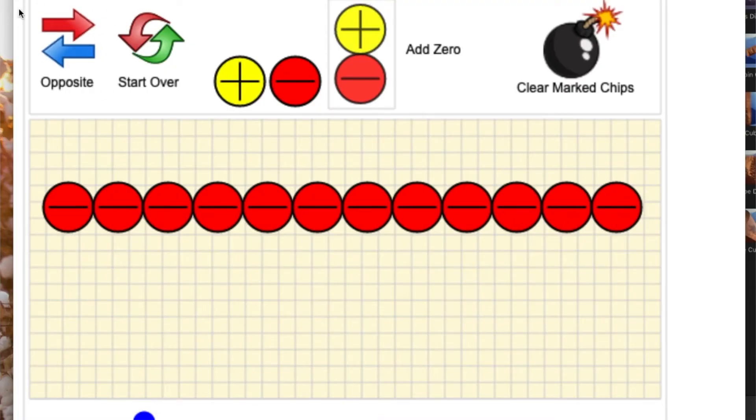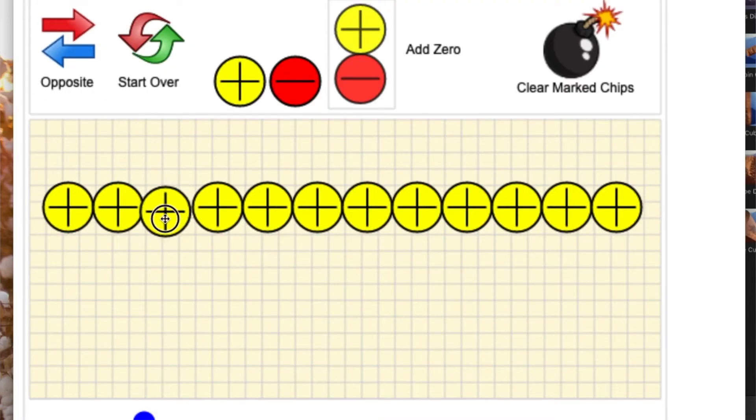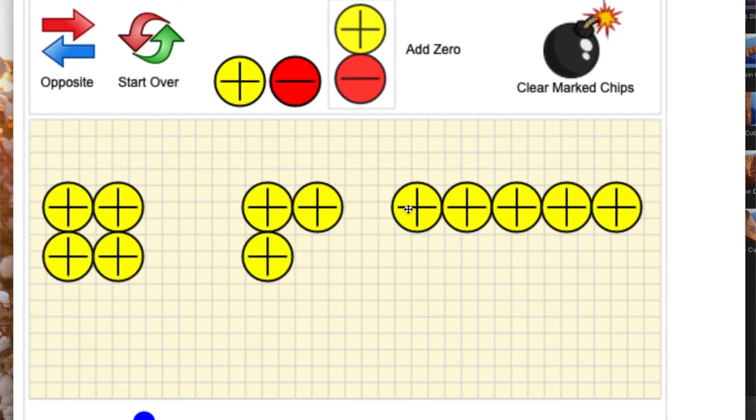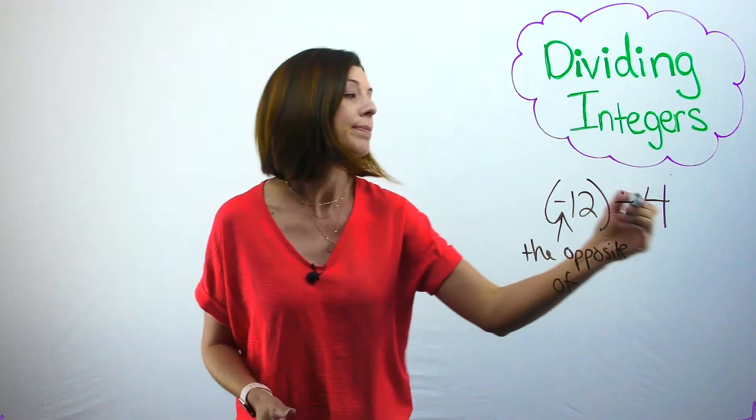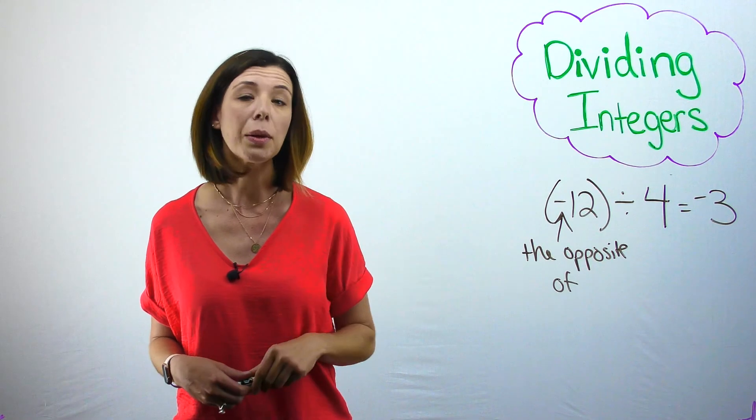So I can think of it as the opposite of 12 divided by 4 and do it that way. And then I know that positive 12 divided by 4, positive 3, and the opposite of that would be negative 3. This is how I would think about this particular problem.